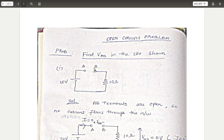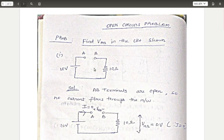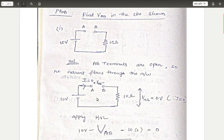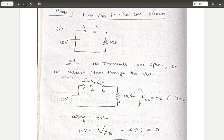If the circuit is open, there will not be any flow of current throughout the circuit. I have redrawn the circuit with I = 0. Since current I = 0, there is no flow of current across the 10 ohm resistor either. The voltage across the 10 ohm resistor is zero, since V = I × R and I = 0.